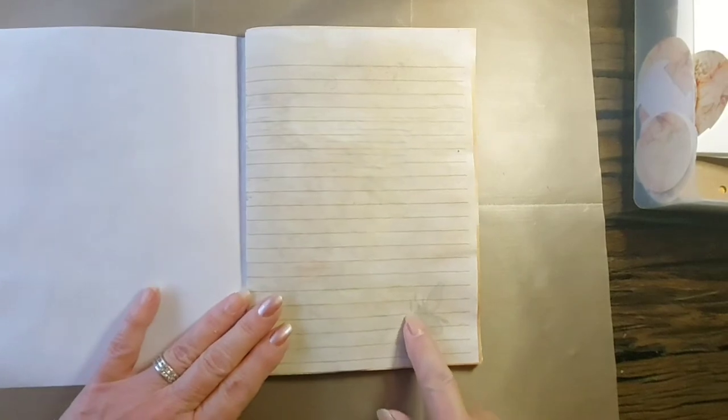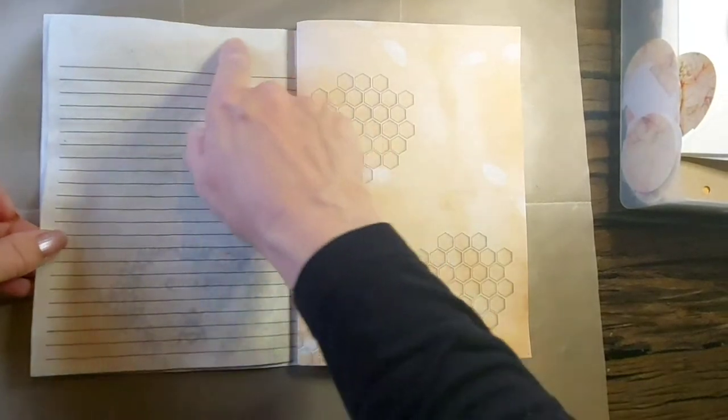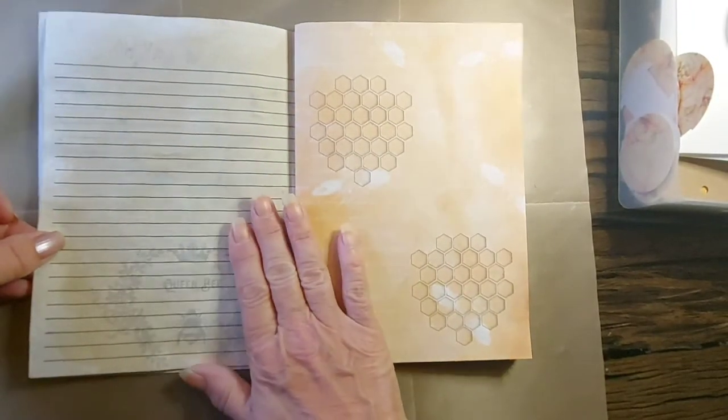So this page is lined. And now these bees are from my own sketches. Again, this one is more lined and it's tea stained.